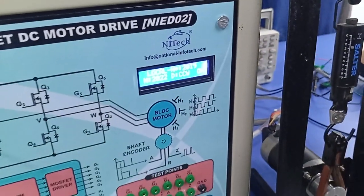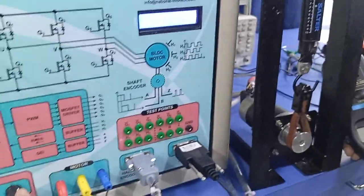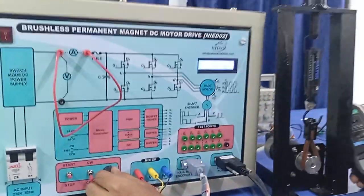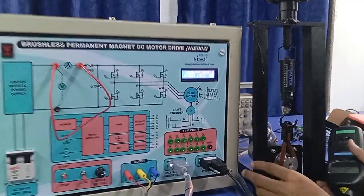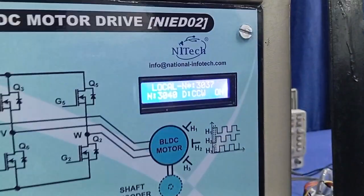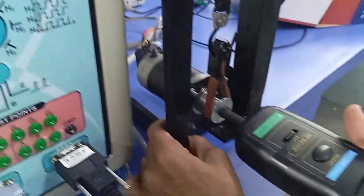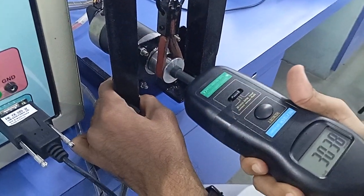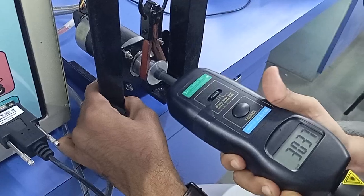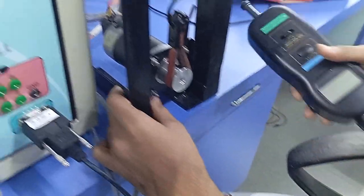Now with the same load, let's increase the speed to 3000 rpm. The motor speed is increased to 3039 reference, and you can see it is tracking with the same load.